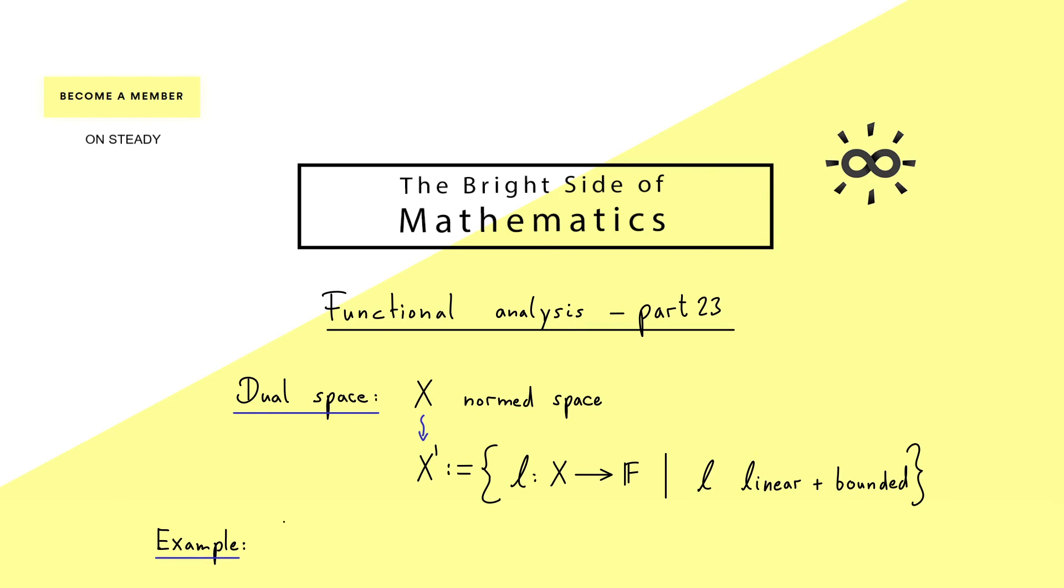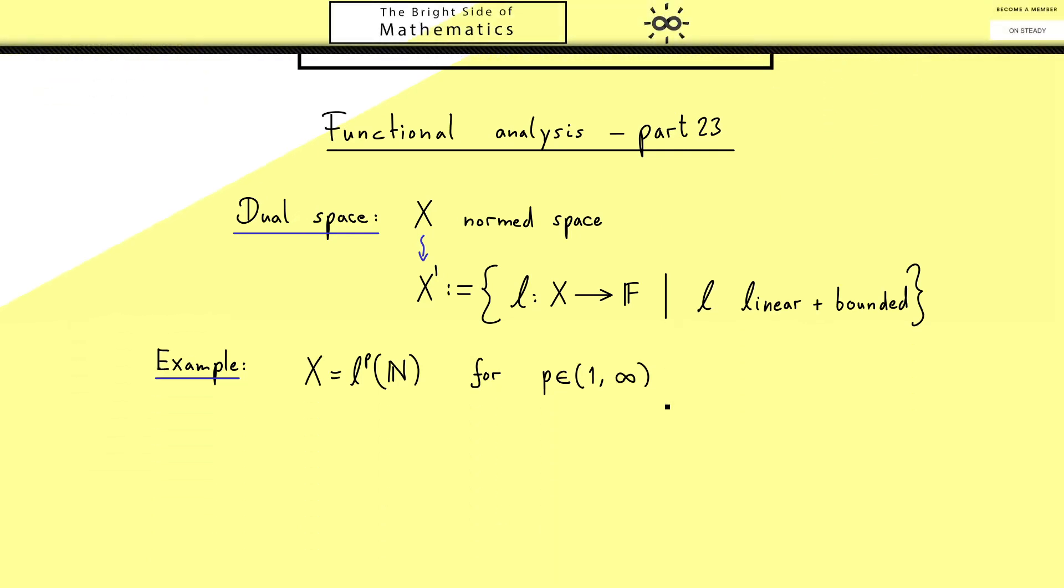As promised this video is about examples so I choose X to be the LP space and as always I want p to be between 1 and infinity. So for this LP space the dual space looks indeed very nice.